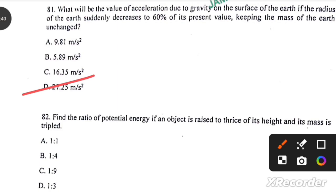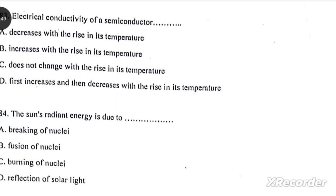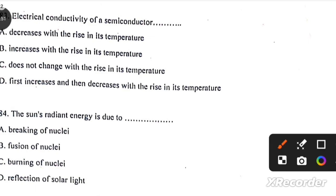Find the ratio of the potential energy if an object is raised to thrice its height and mass is tripled. 1 is to 9. Electrical conductivity of a semiconductor increases with the rise in its temperature. The sun's radiant energy is due to fusion of nuclei.